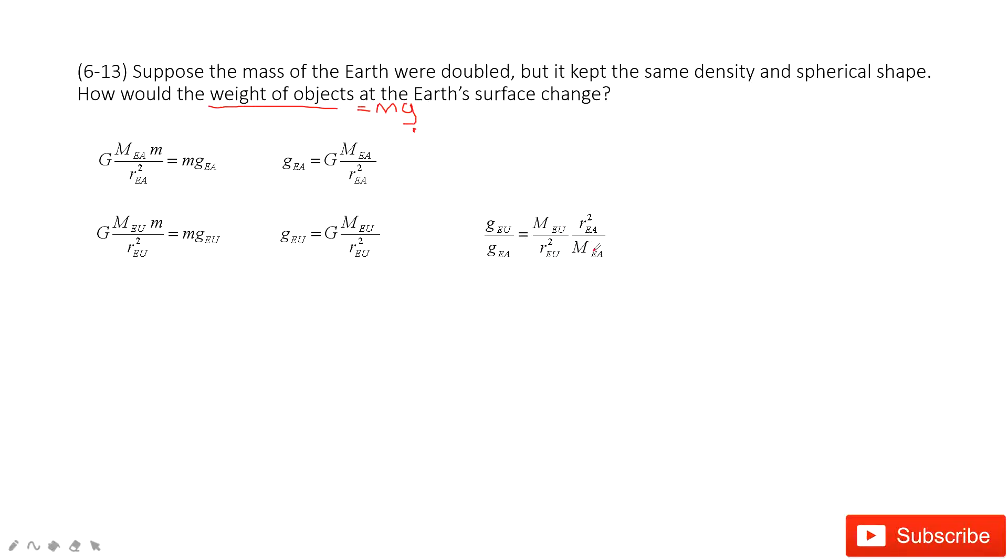Now we know the mass is doubled. But what happens to the radius? It keeps the same density. So in this one, the mass of the Earth equals density ρ times its volume. Similarly for Eu, the density times the volume. And then we can take the ratio. The mass Ea divided by mass Eu equals the radius cubed ratio.